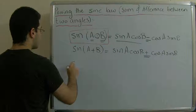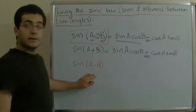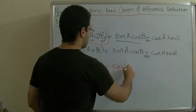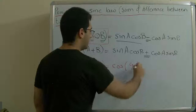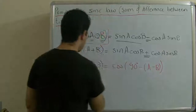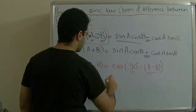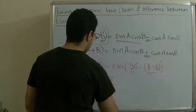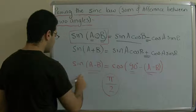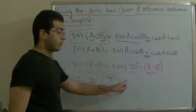So where does this rule come from? We have sine of (a minus b). As we just said, this equals cosine of 90 degrees minus a minus b. This is theta and this is 90 minus theta. By the way, 90 may be written as π over 2, because in trigonometry π equals 180 degrees, so 180 divided by 2 equals 90.